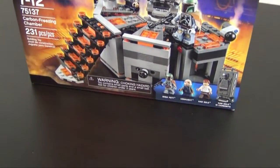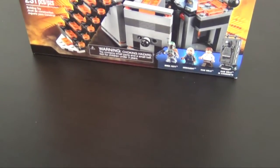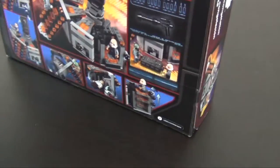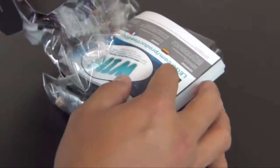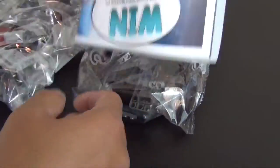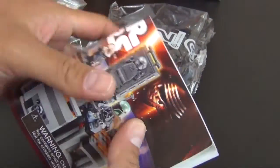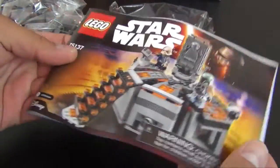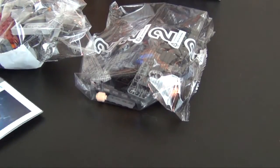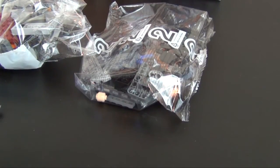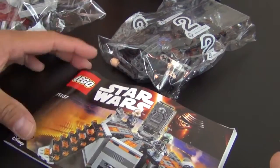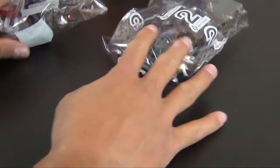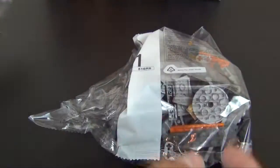So, let's go ahead and move the camera down, open this up, see what we have in here. It's a relatively small set, a little over 200 elements in this set, so it should be a somewhat simple build. We have a single instruction book, kind of rolled up a little bit, so I'm reverse rolling it so it'll lay flat on the table. We have a bag one, and we have a bag number two.